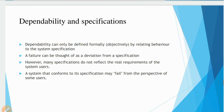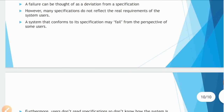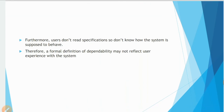Dependability and specification: dependability can only be defined formally by relating behavior to the system specification. A failure can be thought of as a deviation from a specification. However, many specifications do not reflect the real requirements of system users, and a system that conforms to a specification may fail from the perspective of some users. Furthermore, users don't read specifications, so they don't know how the system is supposed to behave. Therefore, a formal definition of dependability may not reflect user experience, as there are many users with many different expectations.